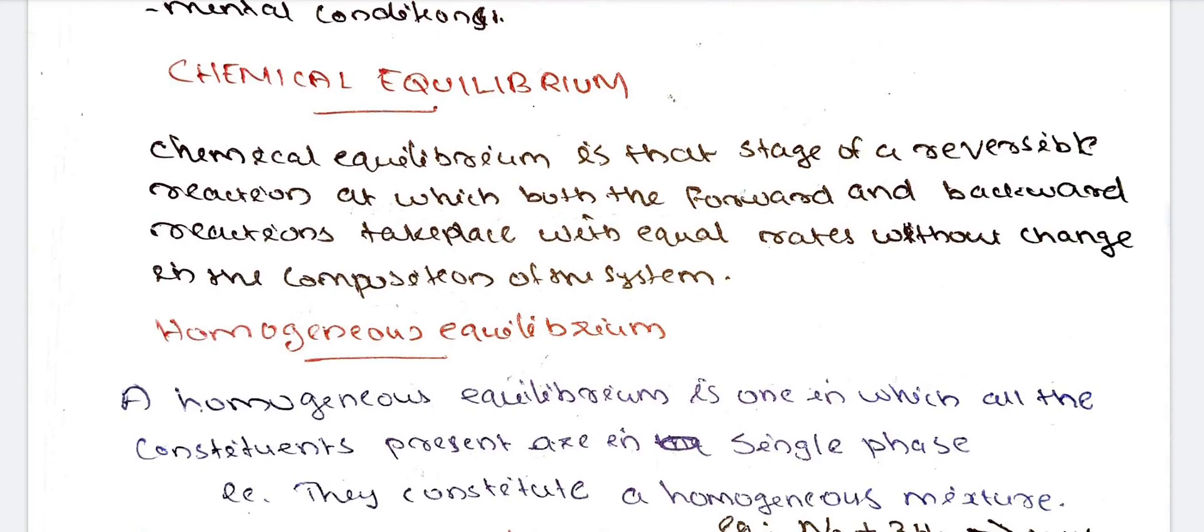Chemical equilibrium is that stage of reversible reaction at which both forward and backward reactions takes place with the equal rates without change in the composition of the system. That is chemical equilibrium is that there is a reversible reaction, an equilibrium position. Forward reaction, backward reaction is that there is a rate. That is why the system composition will not be changed.